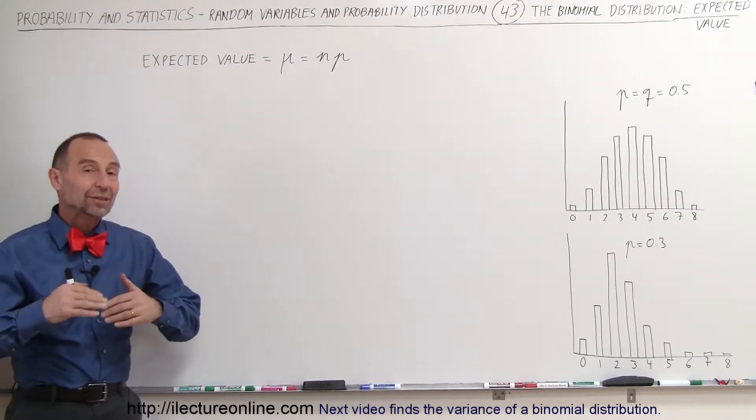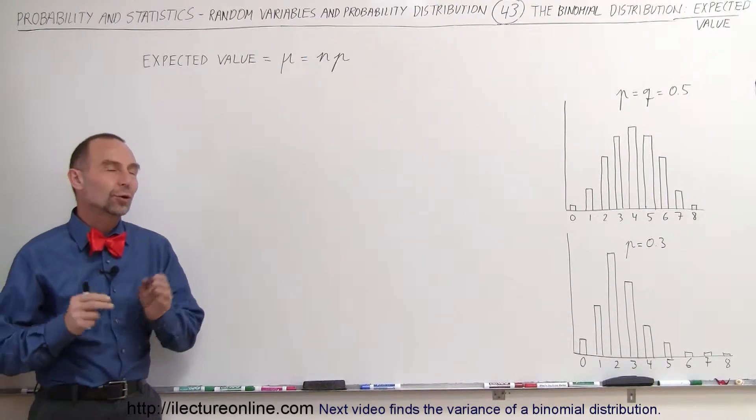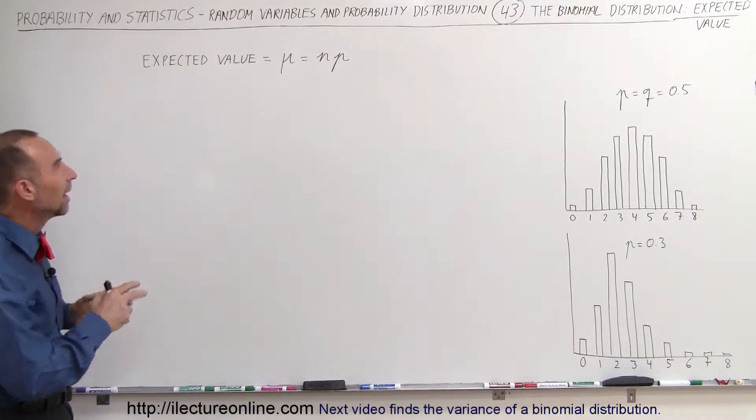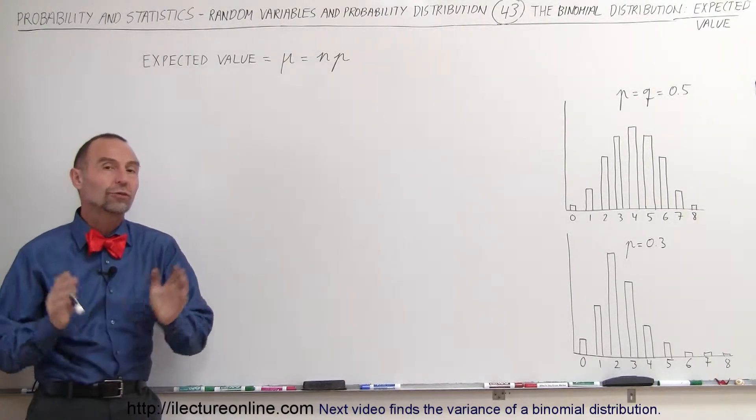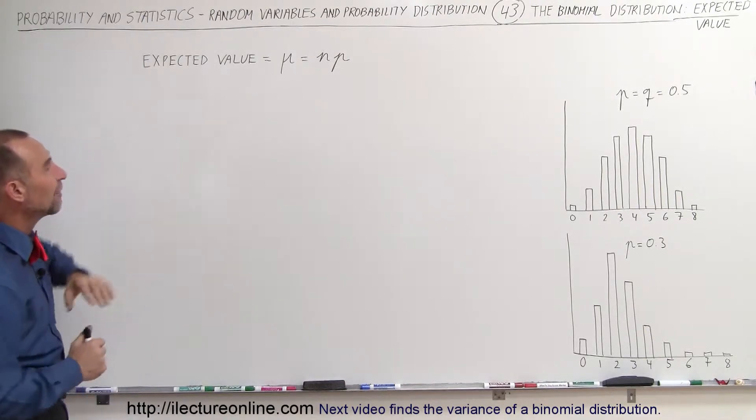Welcome to Electron Online. In this video and the next several videos coming after this, we're going to look at some very special properties of binomial distribution. So the first one we're going to talk about is what we call the expected value.